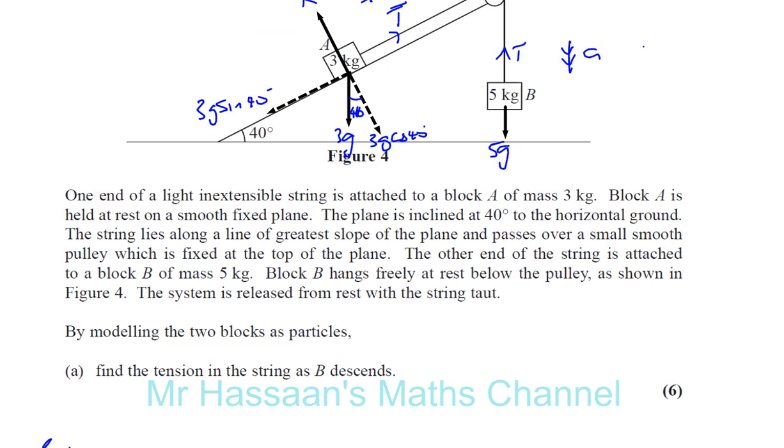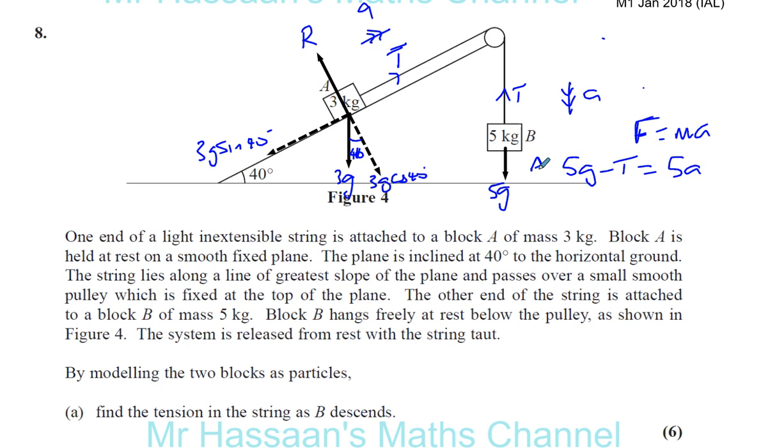So what we can do is we can use the fact that F equals MA for each of these particles. So this is accelerating in the vertical plane, it's going to be vertically down. So the resultant force here will be 5g minus T. 5g minus T and that's equal to MA. Now M is 5, it's equal to 5A. So 5g minus T equals 5A. The resultant force, down force minus upward force, is equal to mass times acceleration, 5A. Acceleration is going in the same vertical plane. That's for particle B.